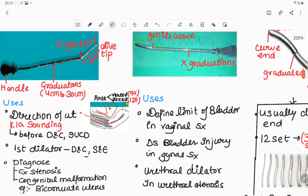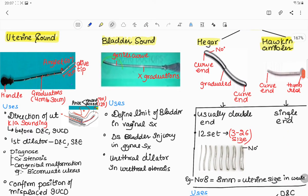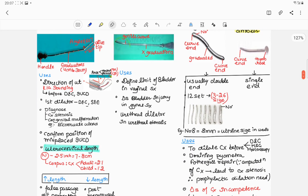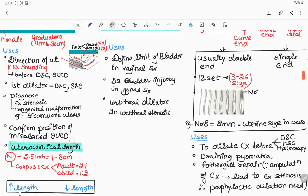It is used to know the direction of the uterus called sounding before any surgery like D&C or intrauterine device insertion. For example, in this picture you can see here uterus is anteverted and anteflexed. It can be used as first dilator during D&C and suction and evacuation. It can be used to diagnose cervical stenosis and congenital malformation, example bicornuate uterus. It can confirm the position of misplaced intrauterine copper T device and it is used to calculate uterocervical length.